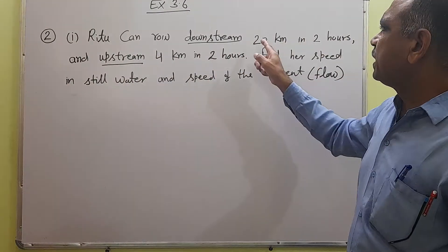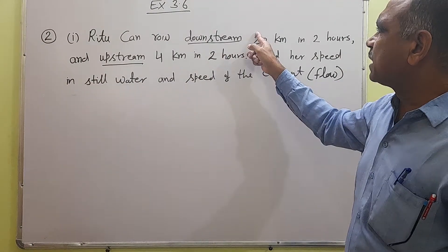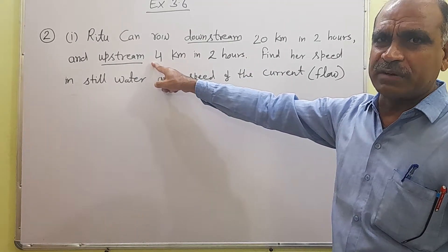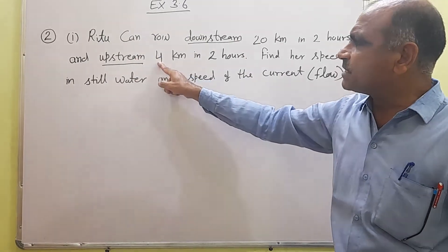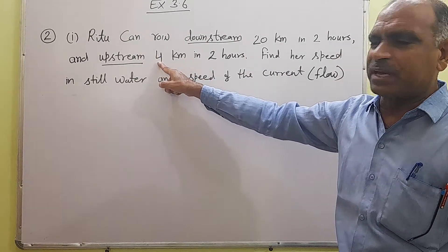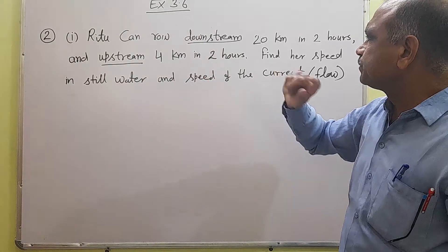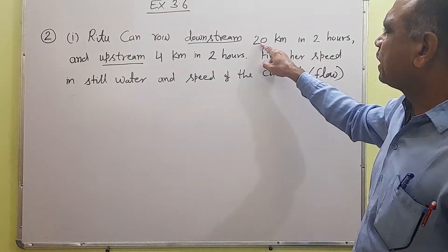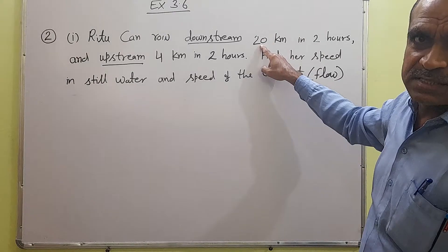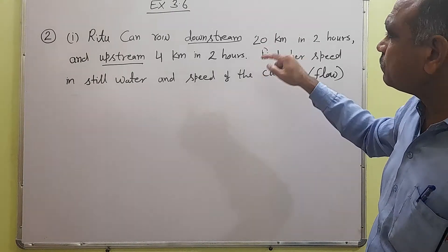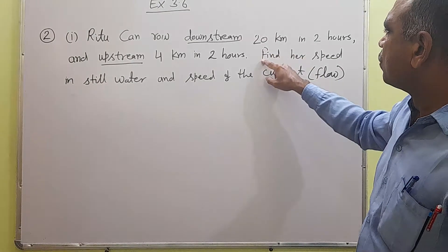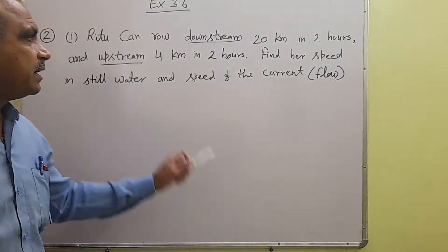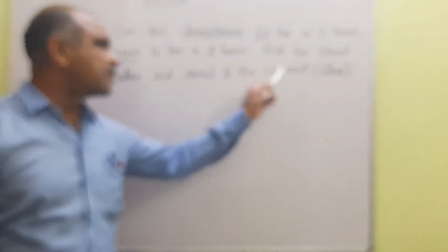In the same hours, downstream distance is more to cover, and upstream distance is less to cover. Find her speed in still water and speed of the current.